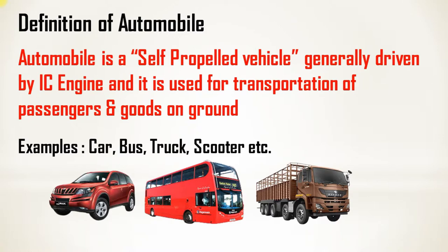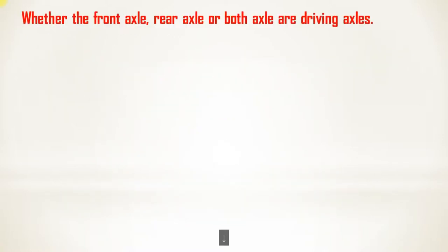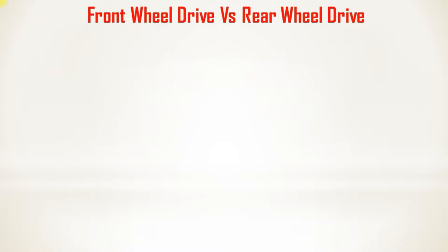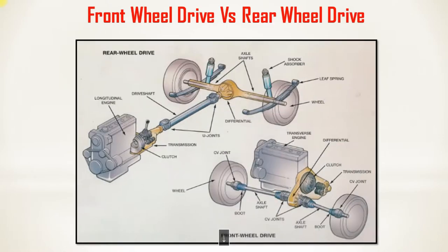Now we will classify the automobile according to the transmission of power to the axle — whether the front axle, rear axle, or both axles are the driving axle. We can classify the automobile into front wheel drive, rear wheel drive, four wheel drive, and all wheel drive.